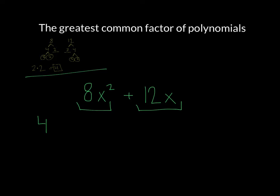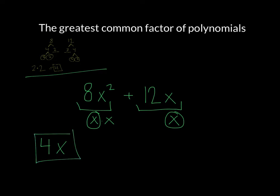The second thing you're going to do is look at the greatest common factor between the variables. To see this visually, x squared is x times x, and x by itself is x to the first. So we pull out the greatest multiple of x that we can — that means we're pulling out an x. Which means that 4x is the greatest common factor between 8x squared and 12x.